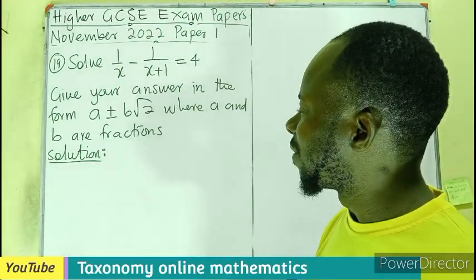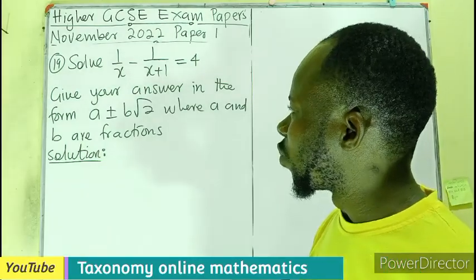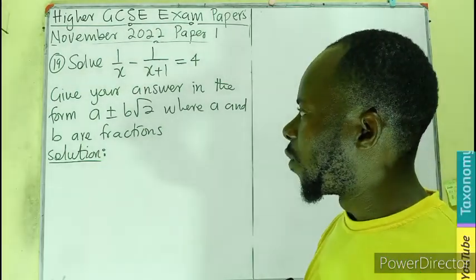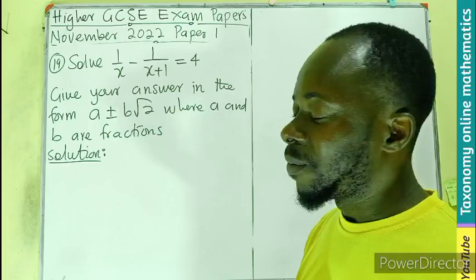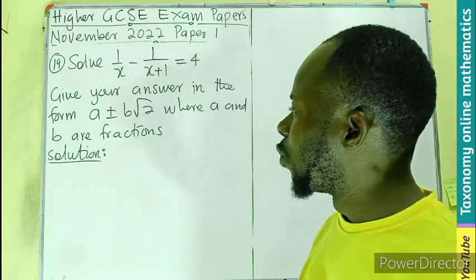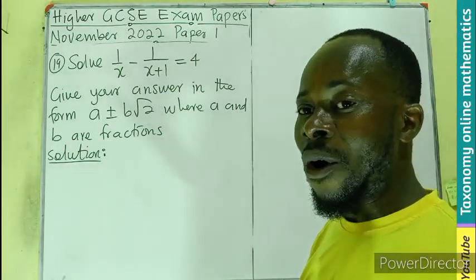We have to solve 1 over x minus 1 over x plus 1 equals 4. We have to give our answer in the form A plus or minus B root 2, where A and B are fractions.